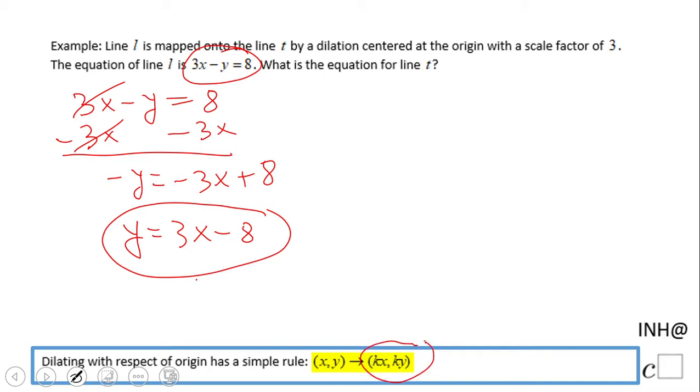Now, very simple. We're going to use this formula here using the scale factor, which I think it was 3. We're going to take that (0, -8) or 8 - the y-intercept - we're going to multiply by 3.